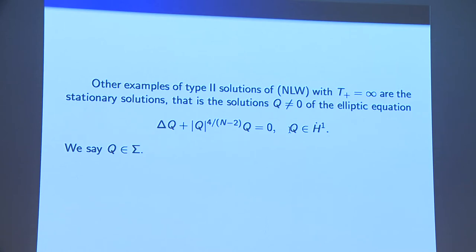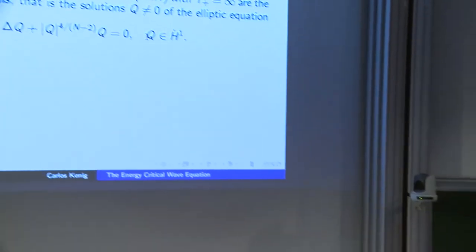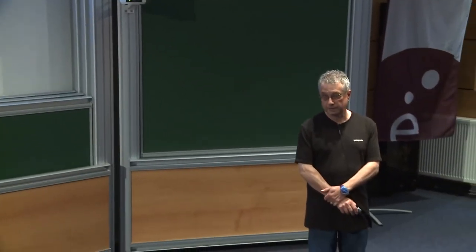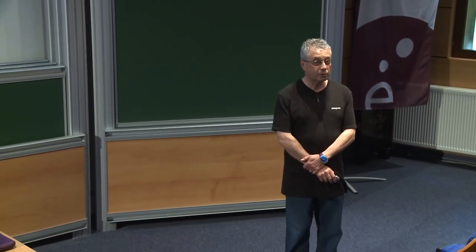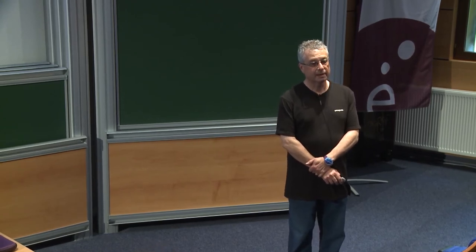Let's look at other examples of bounded solutions that exist for all time. If we forget about the time derivatives, what we are left with is this nonlinear elliptic equation — for N equals 3, the Laplacian of Q plus Q to the fifth equals zero. This nonlinear elliptic equation has a very long history: it arose in the solution of the Yamabe problem in differential geometry, in the work of Aubin, Talenti, Schoen, and many others.